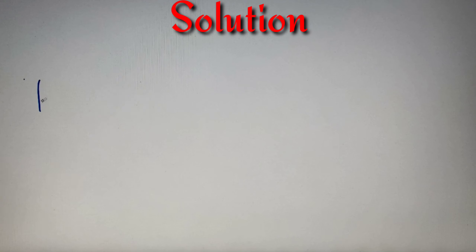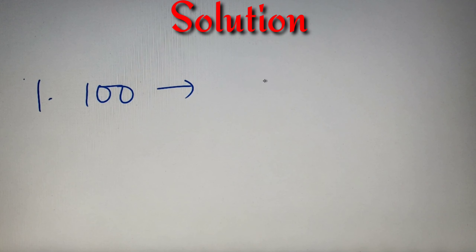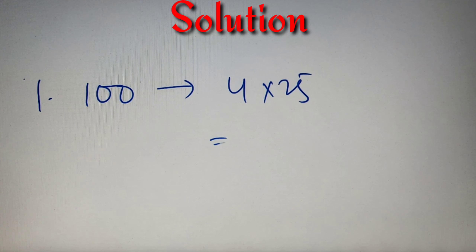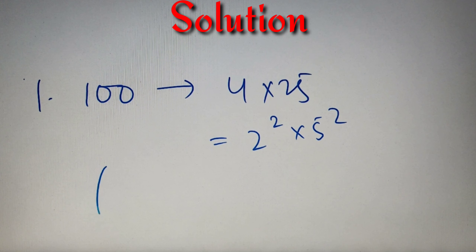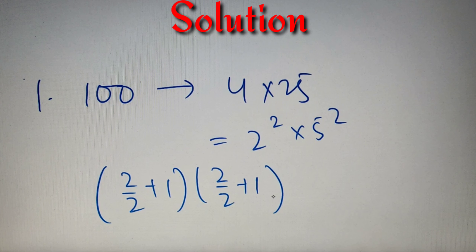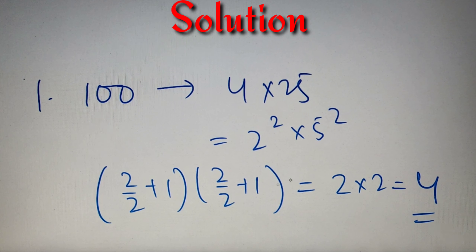According to our first question, we have to find how many factors of 100 are perfect squares. The first step is to prime factorize the number. We know that 100 = 4 × 25, which simplifies to 2² × 5². So putting the exponent values 2 and 2 into the formula, we get floor(2/2) + 1 multiplied by floor(2/2) + 1, which equals 2 × 2 = 4. So the number of perfect square factors of 100 is 4.